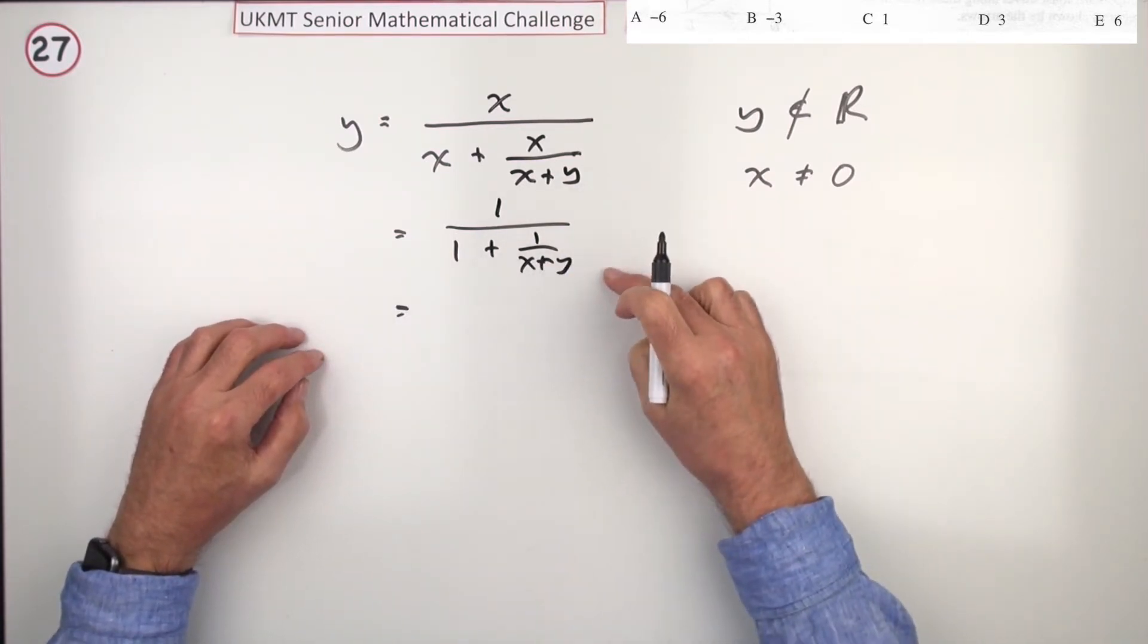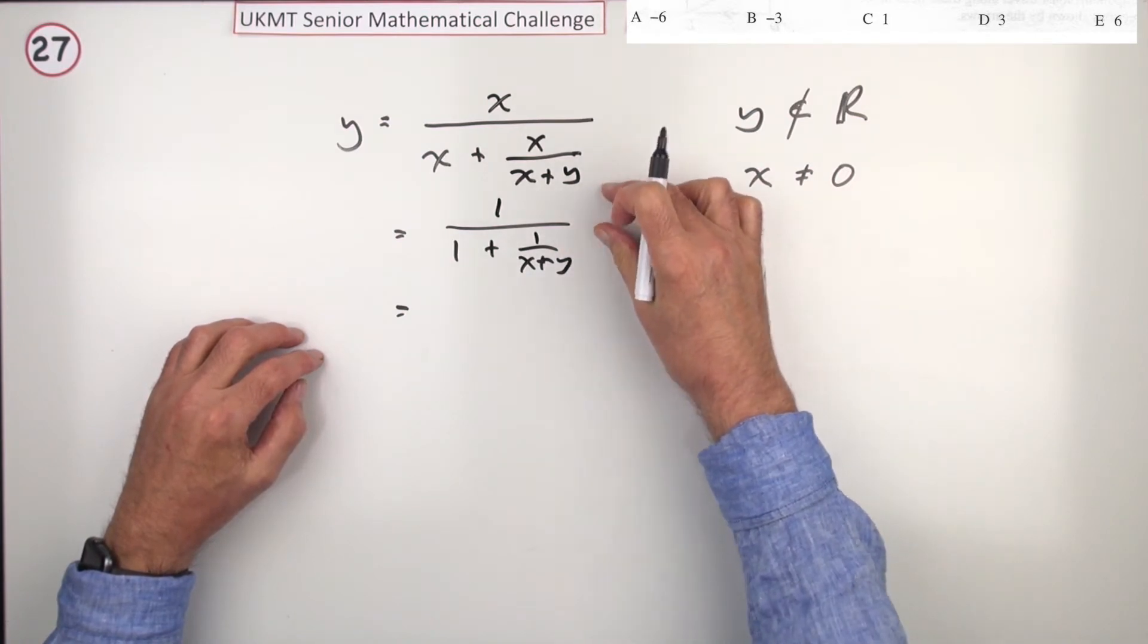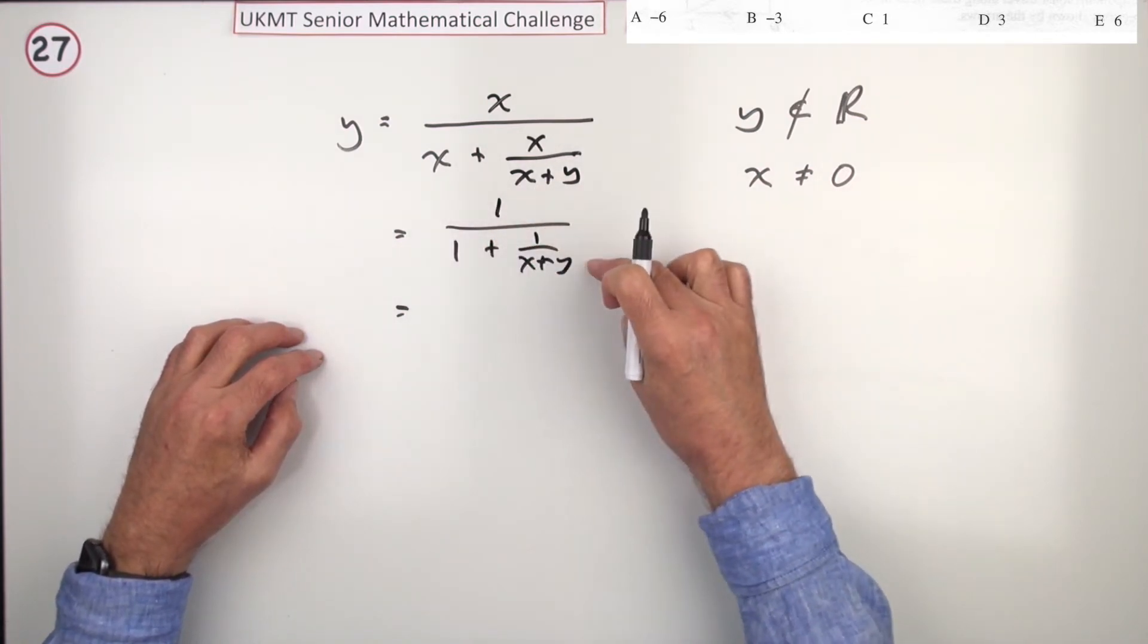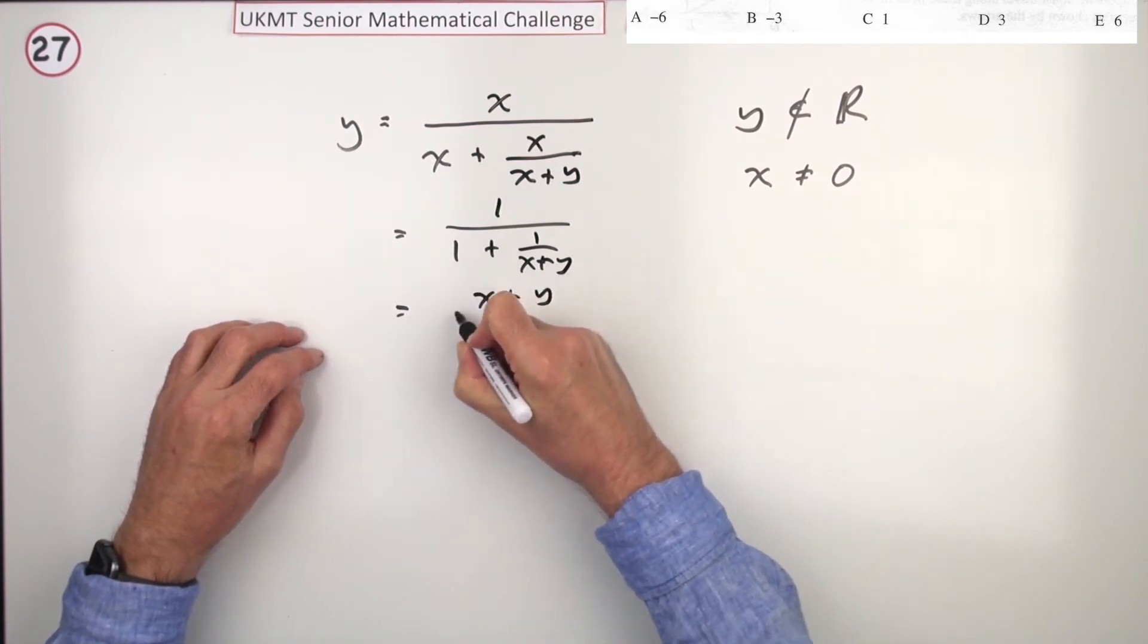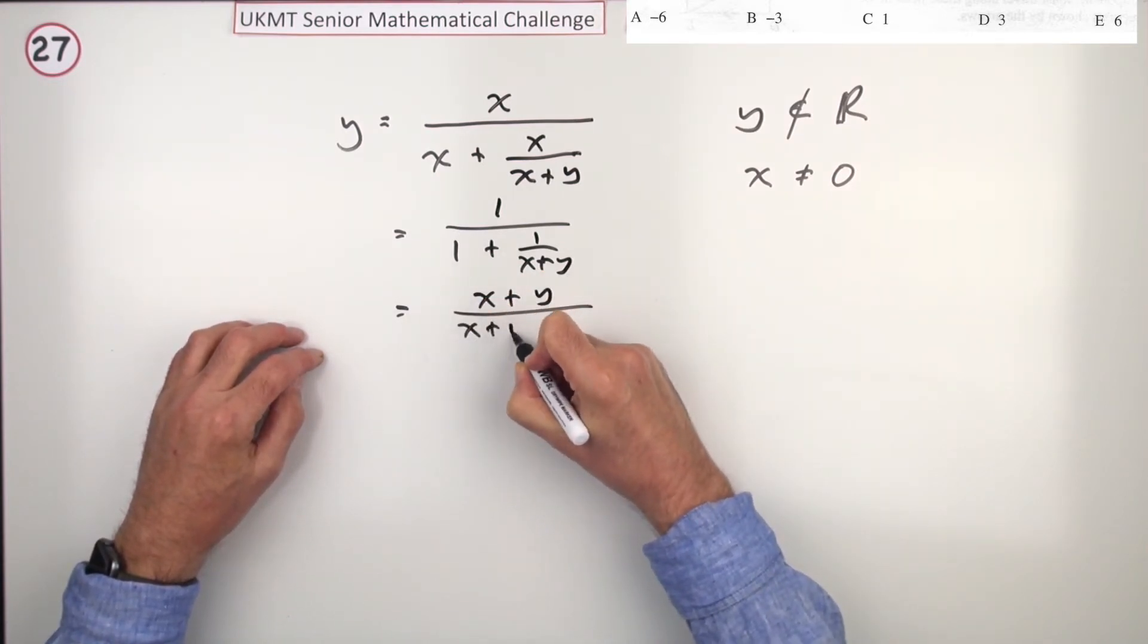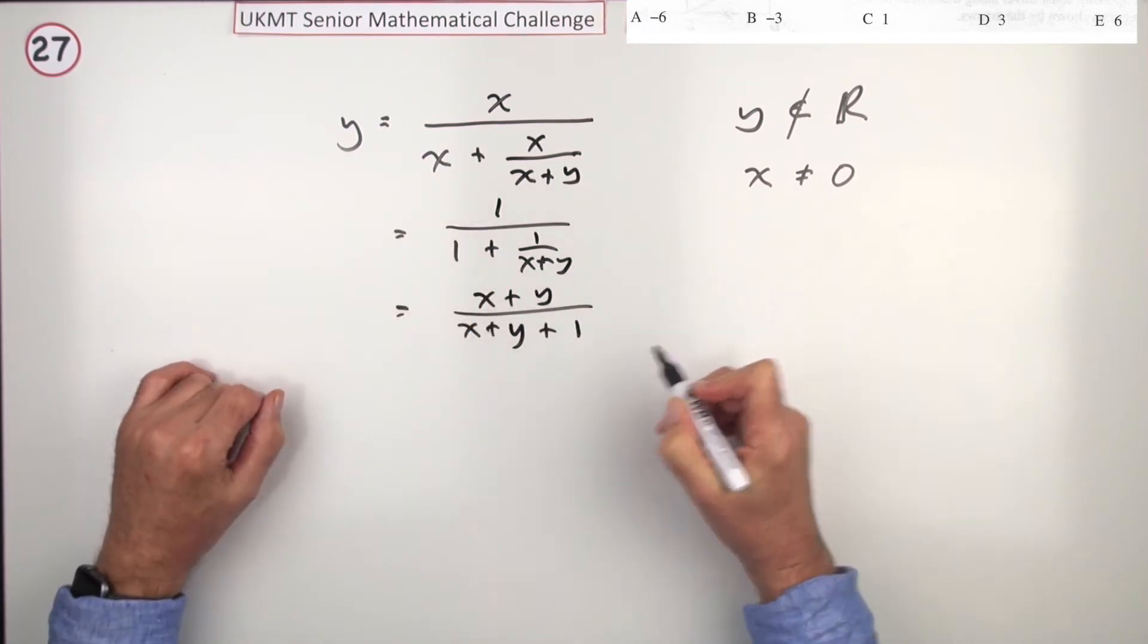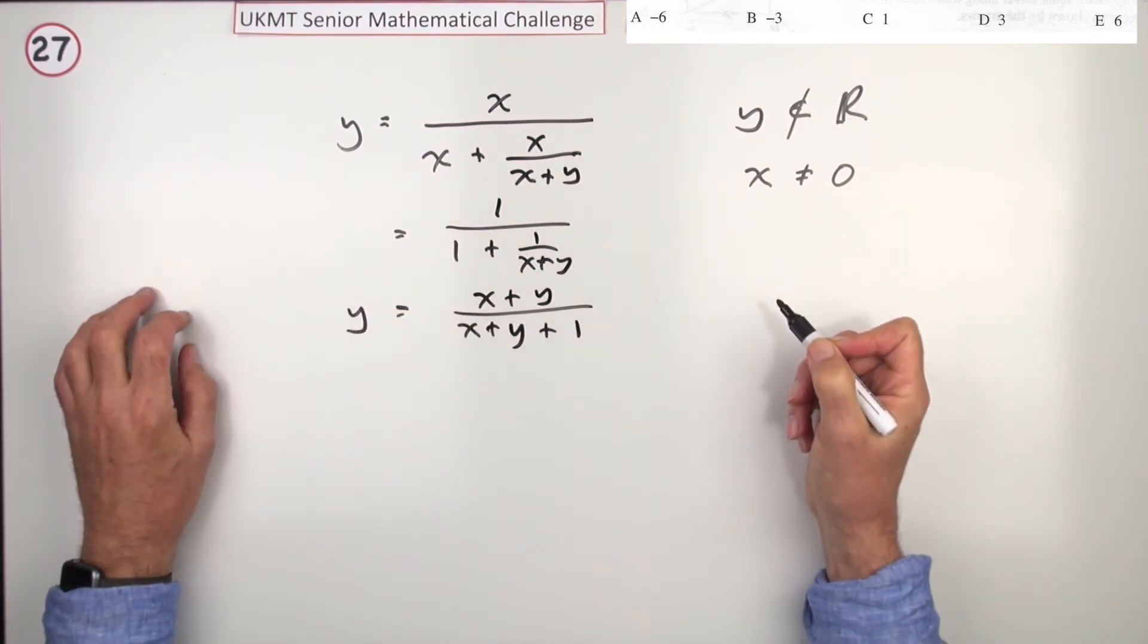Now, I don't like this little fraction here, because it's got a fraction as part of it. Just multiply the three parts, the top and the bottom, by x plus y. x plus y over x plus y, multiplying this one, and that, of course, just becomes 1. So, it's reduced to this.